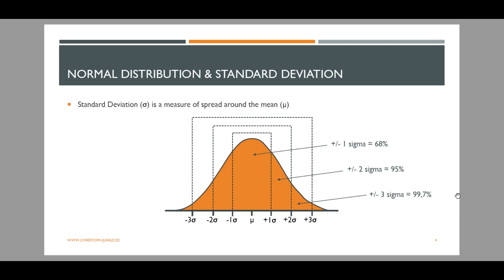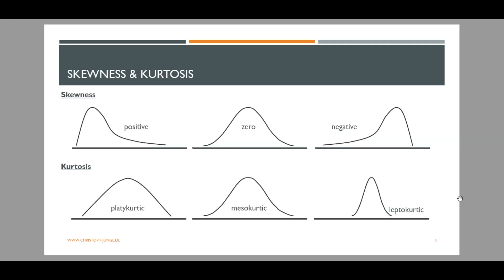The problem in general is that financial data most often is not perfectly normally distributed. In the real world we observe distributions that are either skewed or have more or less observations in the tails. In the financial markets we often see fat tails, meaning more extreme observations than we would expect in a normal distribution, especially in the left tail, which are the negative observations — the losses. A distribution with fat tails is called leptokurtic.